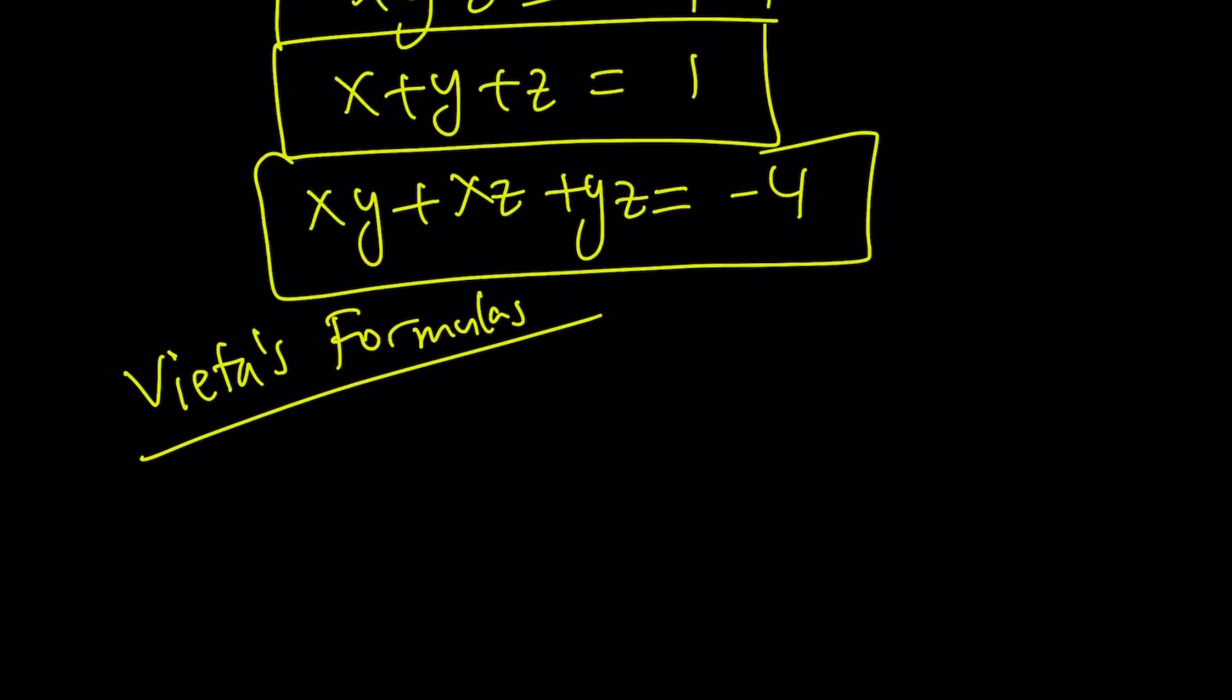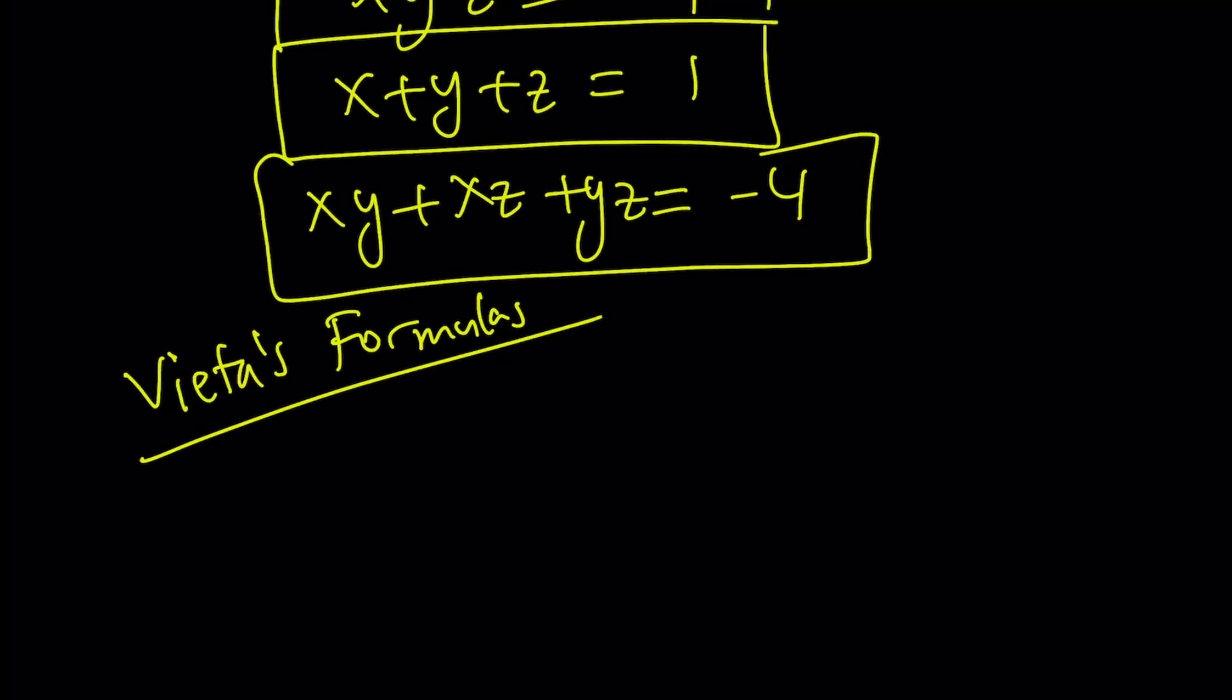And so Vieta's formulas basically tells us if you know the sum, the product, and the two-way products, or the sum of the two-way products, then you can write the equation. So suppose we have an equation. Let's use a different variable, something different from x, y, z.